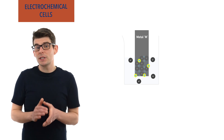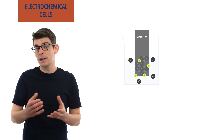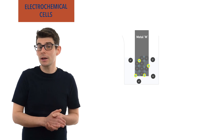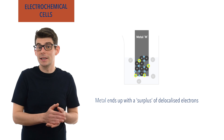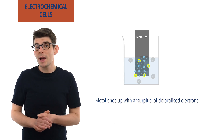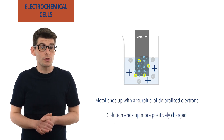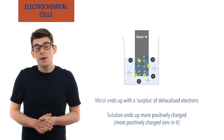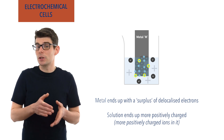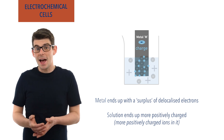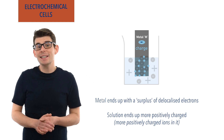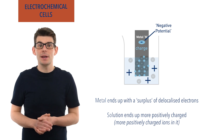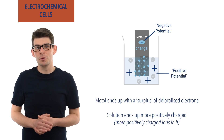The more reactive the metal, the more the position of equilibrium favors the oxidation direction. When atoms in the solid metal get oxidized and become ions, the ions enter the solution. The electrons from the original atom remain in the solid metal as part of the delocalized electron system. This means the solid metal ends up having a surplus of electrons, and the solution ends up being positively charged as the number of positively charged ions in it has increased.